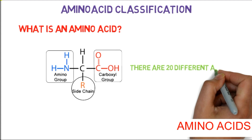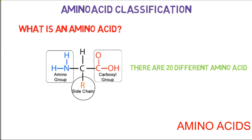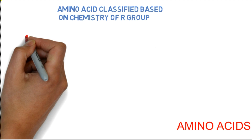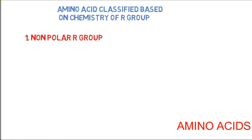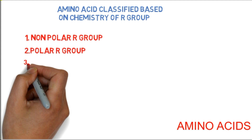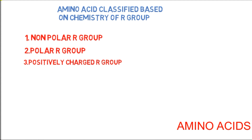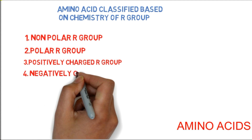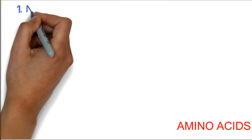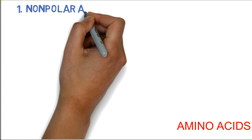There will be different R chains attached based on the chemistry of the R group. There are four groups: the first one is non-polar R group, the second one is polar R group which is hydrophilic, the third one is positively charged R group, and the fourth one is negatively charged R group.